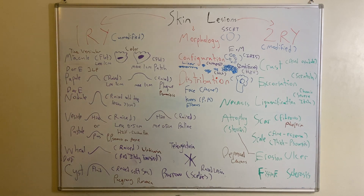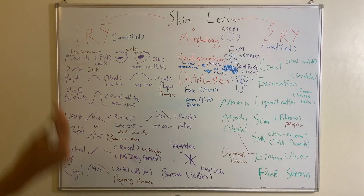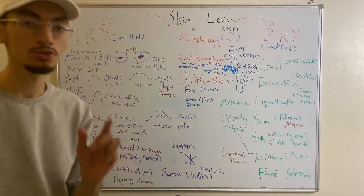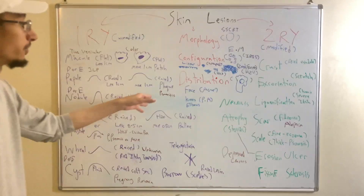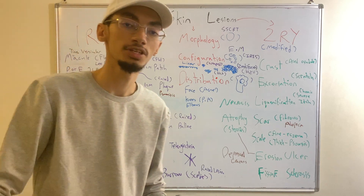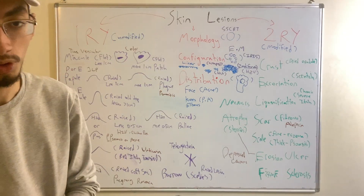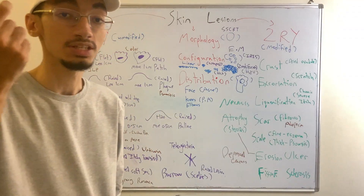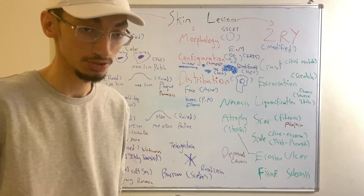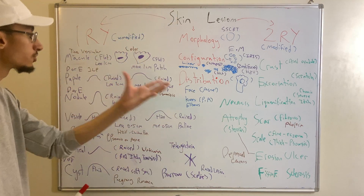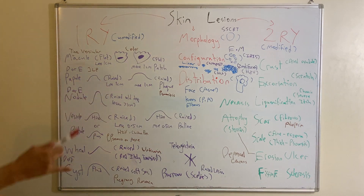A papule is raised, less than one centimeter, and does not consist of fluid. If a solid raised lesion is more than one centimeter, its 'big brother' is called a plaque. A plaque is essentially the same as a papule but larger than one centimeter. Plaques are important because they are the characteristic feature of psoriasis — found on the knees, elbows, and back, often with a scaly texture, irregular borders, and pinkish color.